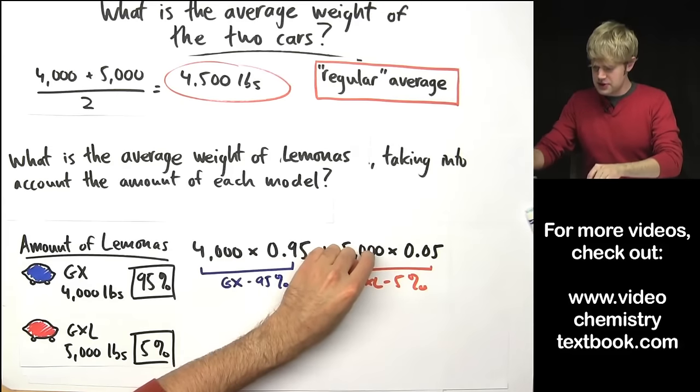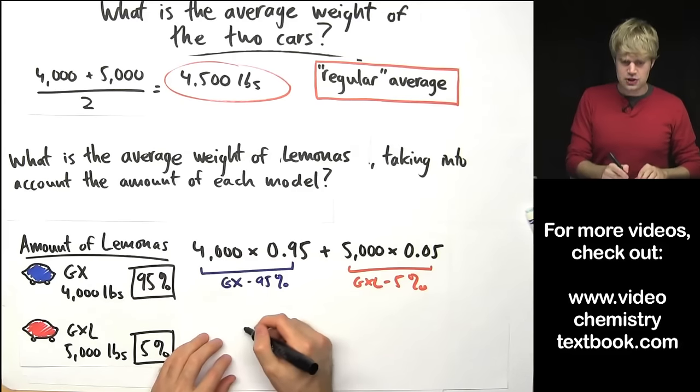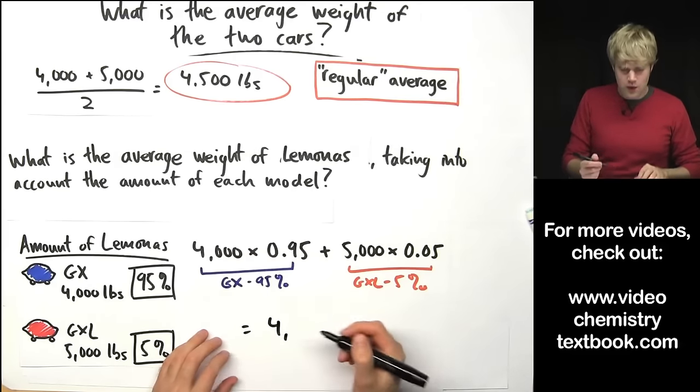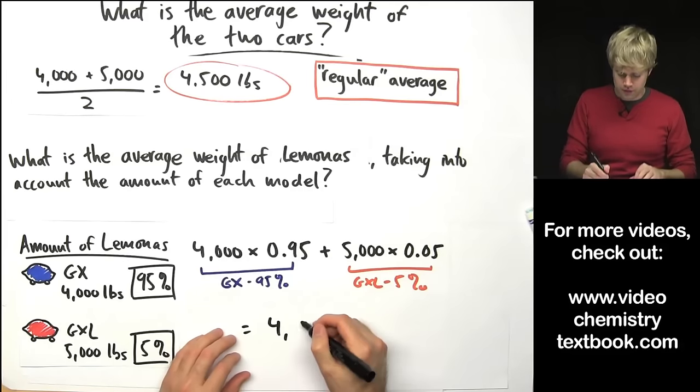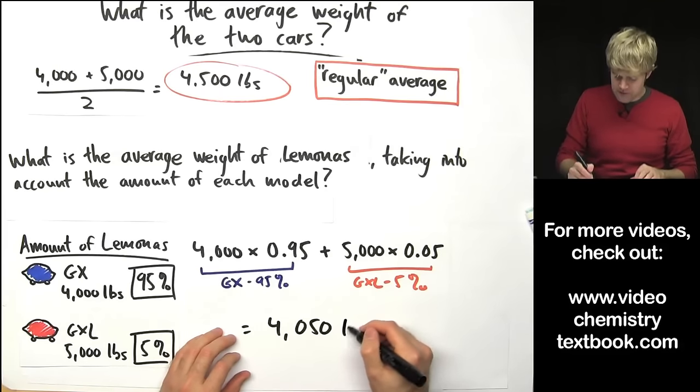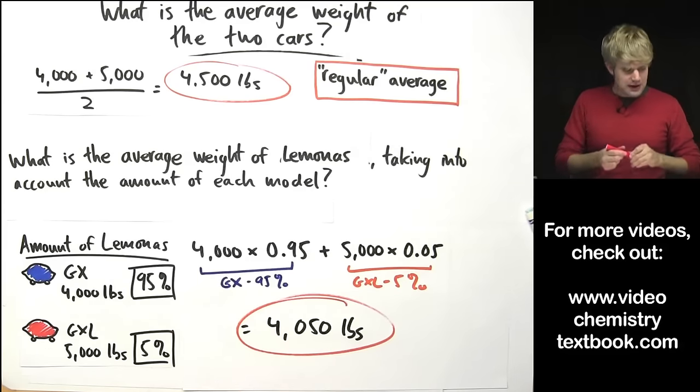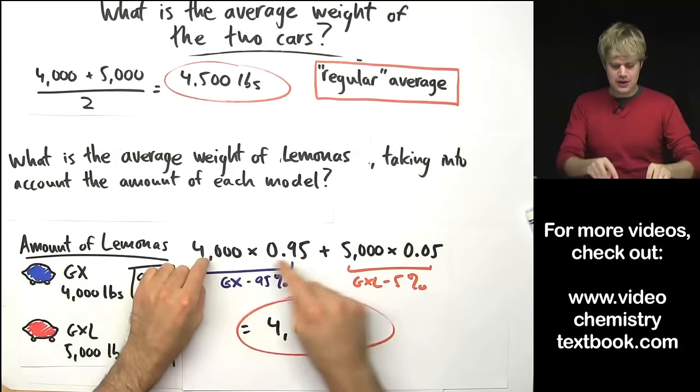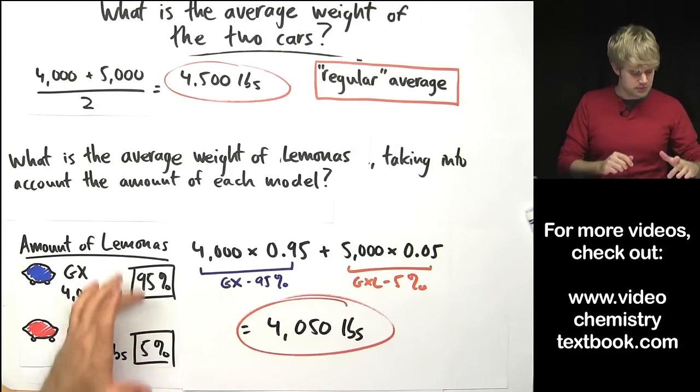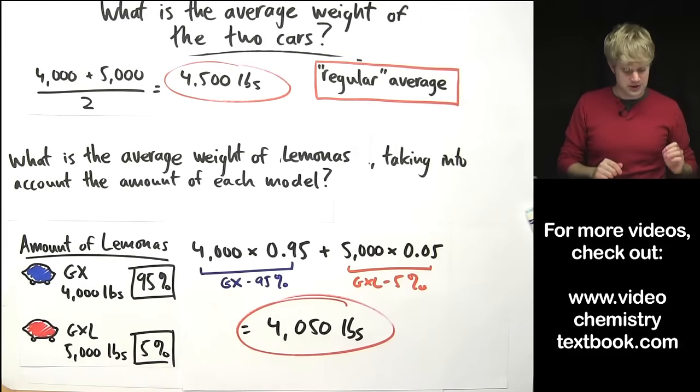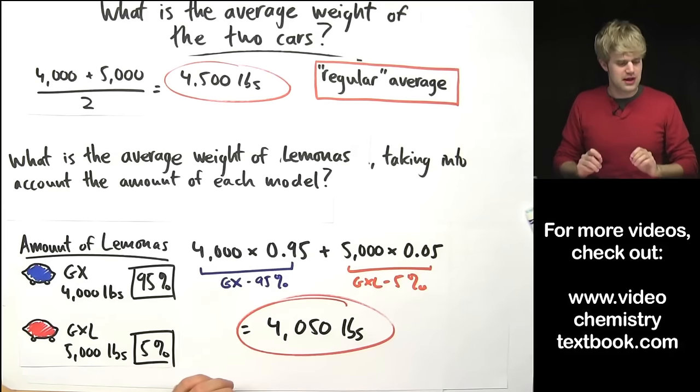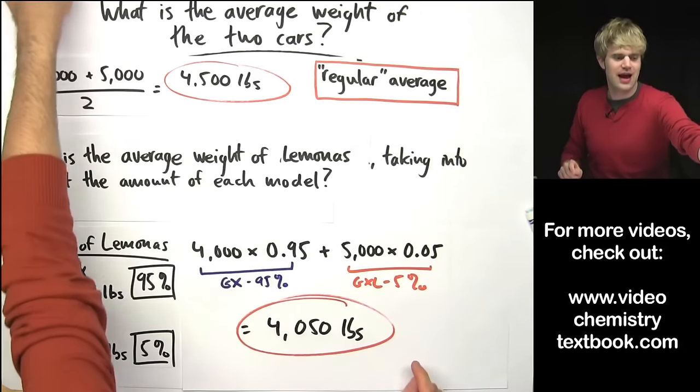I multiply these two things together and then I do the addition and I'm going to end up with a weighted average of 4,050 pounds. Now as you can see here is an average that takes into account the weights of both of these models but it also takes into account the amount that we have of each.